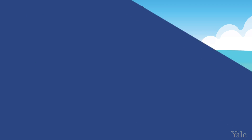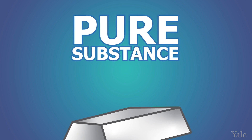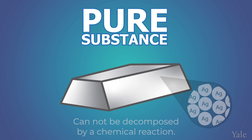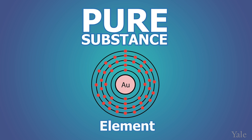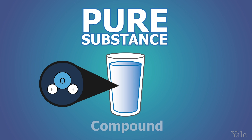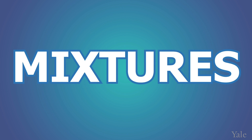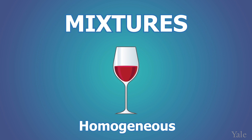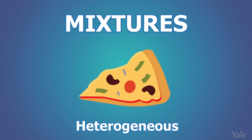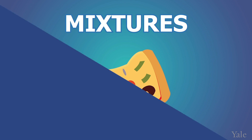Let's summarize the four different classes of matter. We have pure substances like silver that cannot be decomposed via a chemical reaction — a pure substance that cannot be decomposed further is an element. Then we have pure substances like water that can be decomposed via a chemical reaction, which are compounds. We have homogeneous mixtures like wine that are uniform throughout. And we have heterogeneous mixtures like pizza that have distinguishable parts.